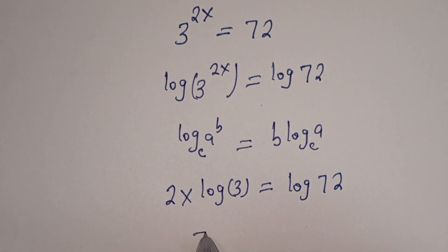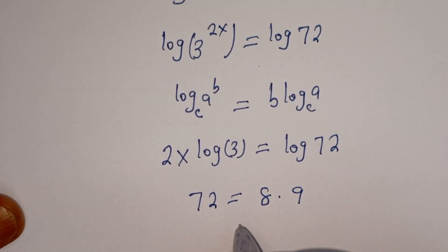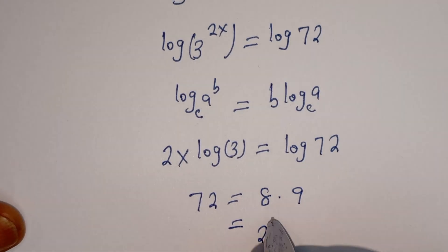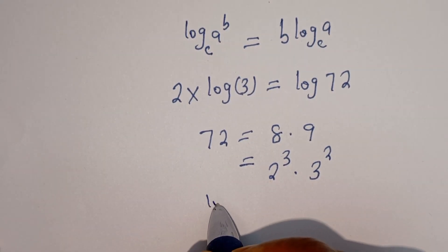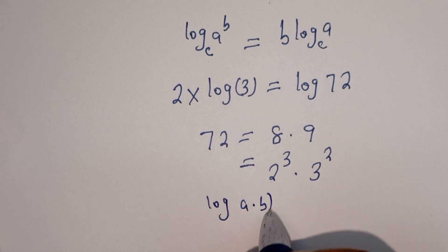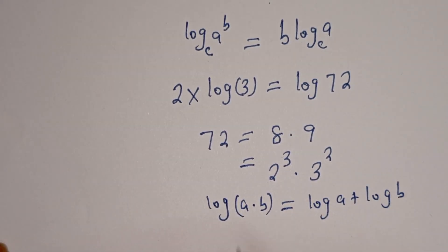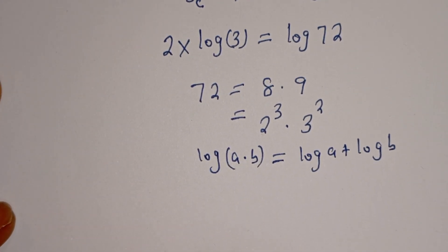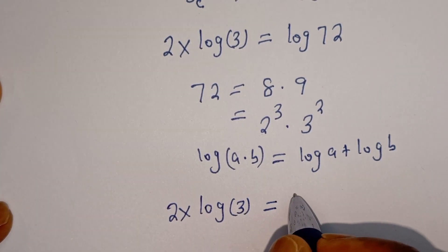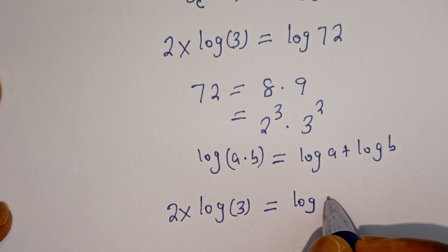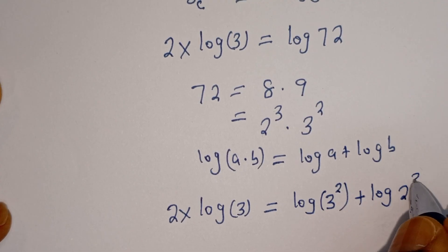72 can be written as 8 multiplied by 9, which is equal to 2 to the power of 3 multiplied by 3 squared. And if you have log A multiplied by B, this is equal to log A plus log B. This can be written as 2x log 3 is equal to log 3 squared plus log 2 to the power of 3.